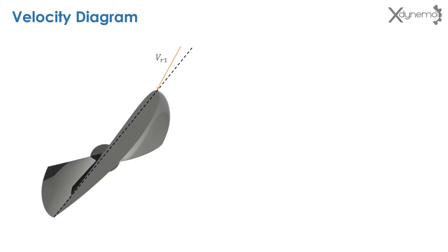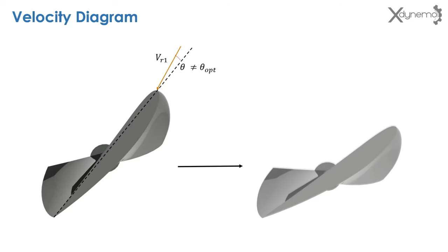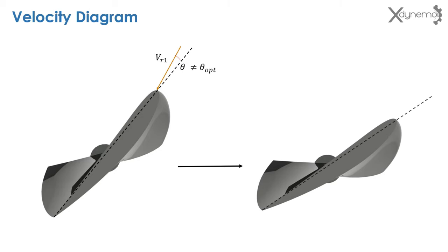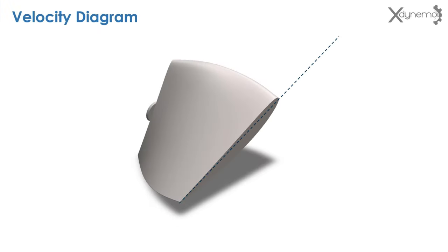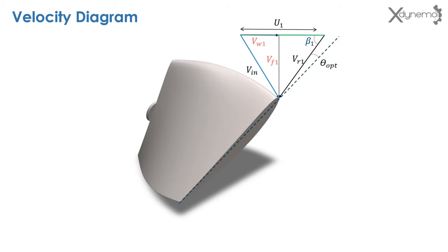As the angle of attack is not optimum at the outer plane of the blade profile, the outer section of the blade is twisted by a certain angle so that the angle of attack becomes the optimum value. Here is the velocity diagram on the twisted blade. Twist along its length in the Kaplan turbine is provided to have always the optimum angle of strike for all cross sections of blades, and hence to achieve greater efficiency of the turbine.